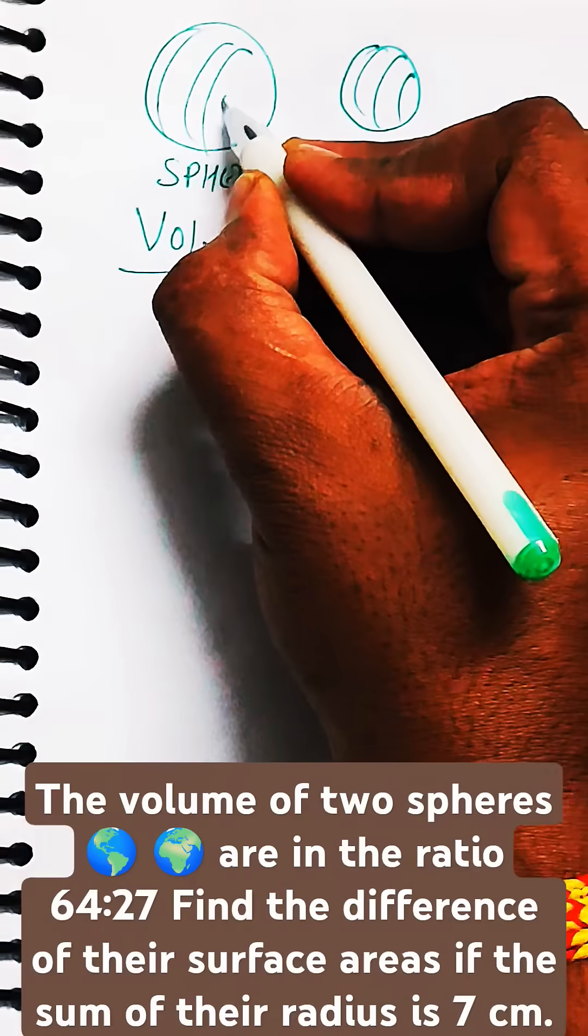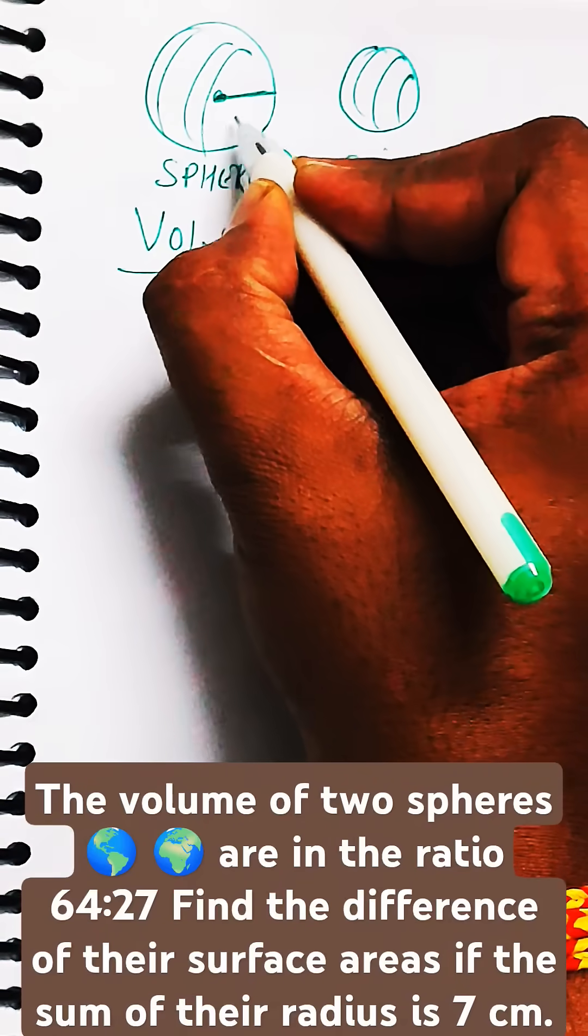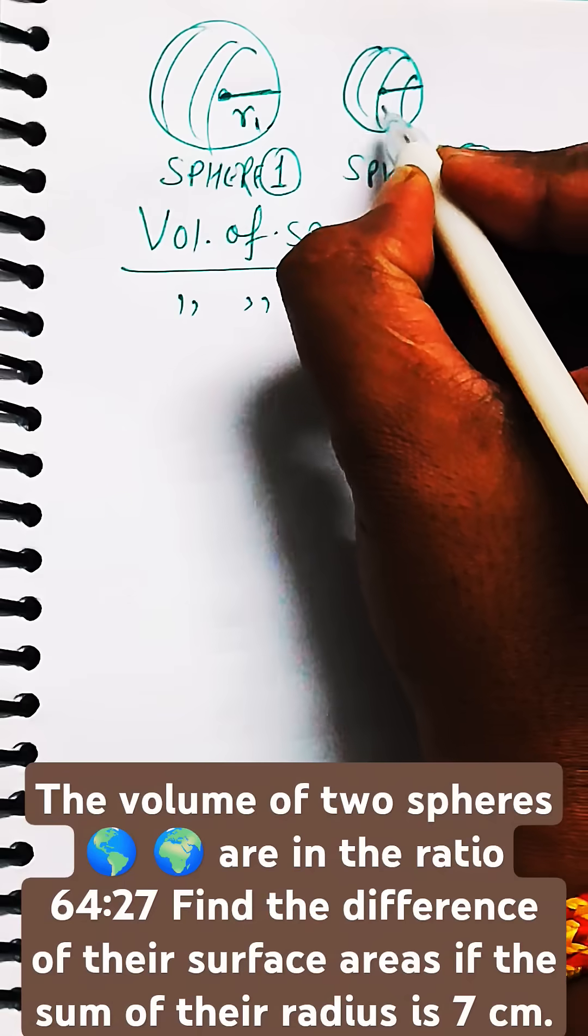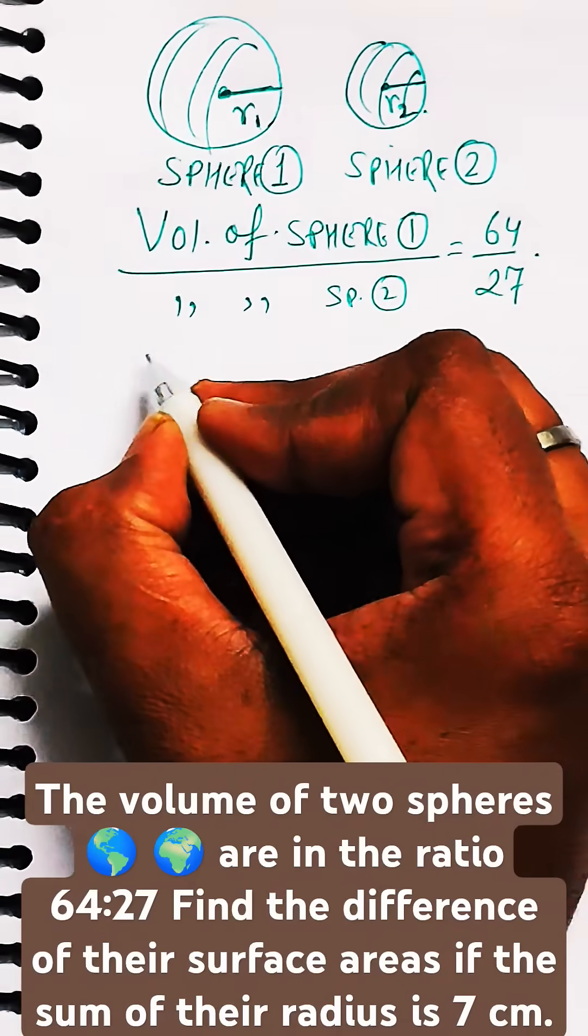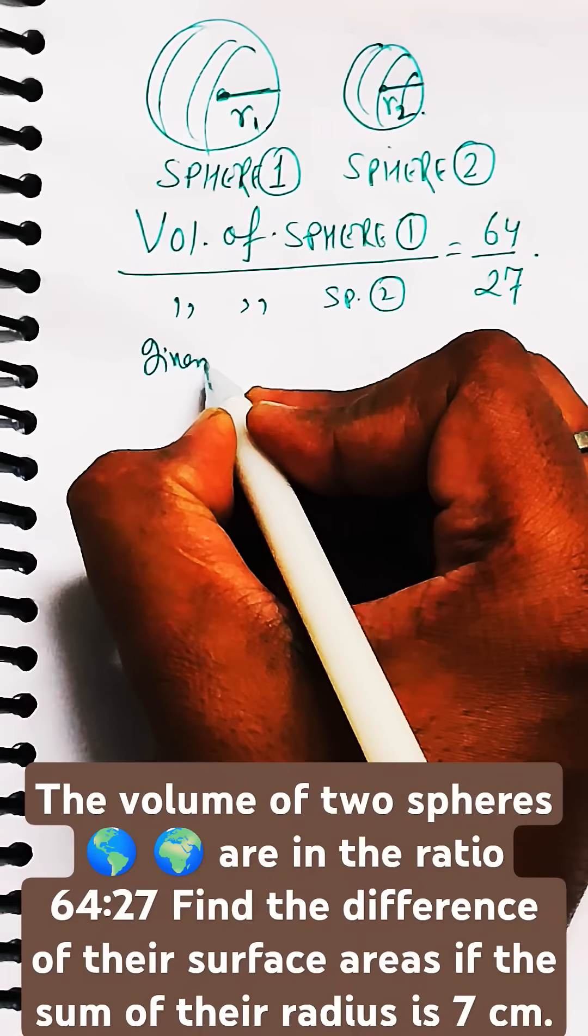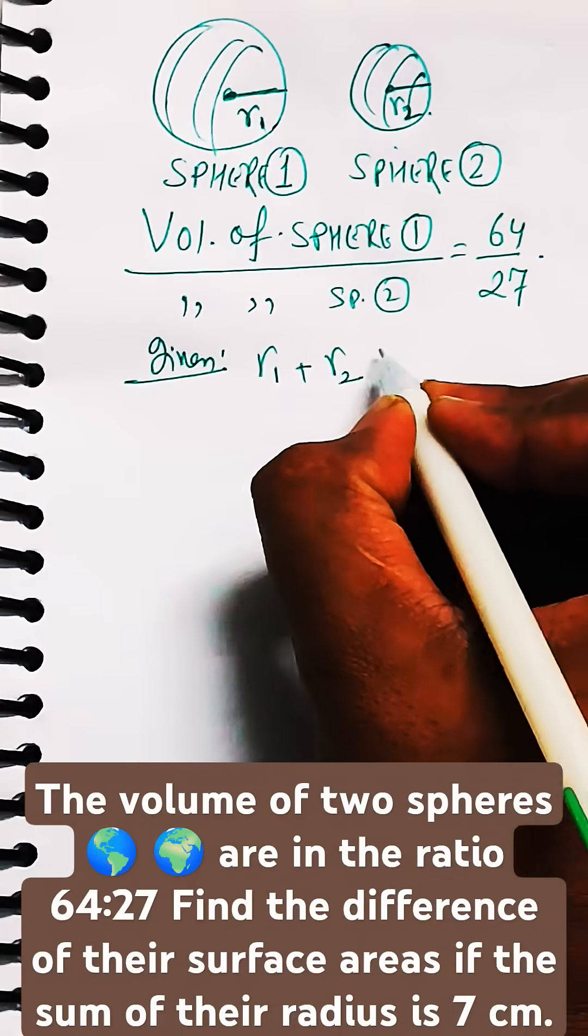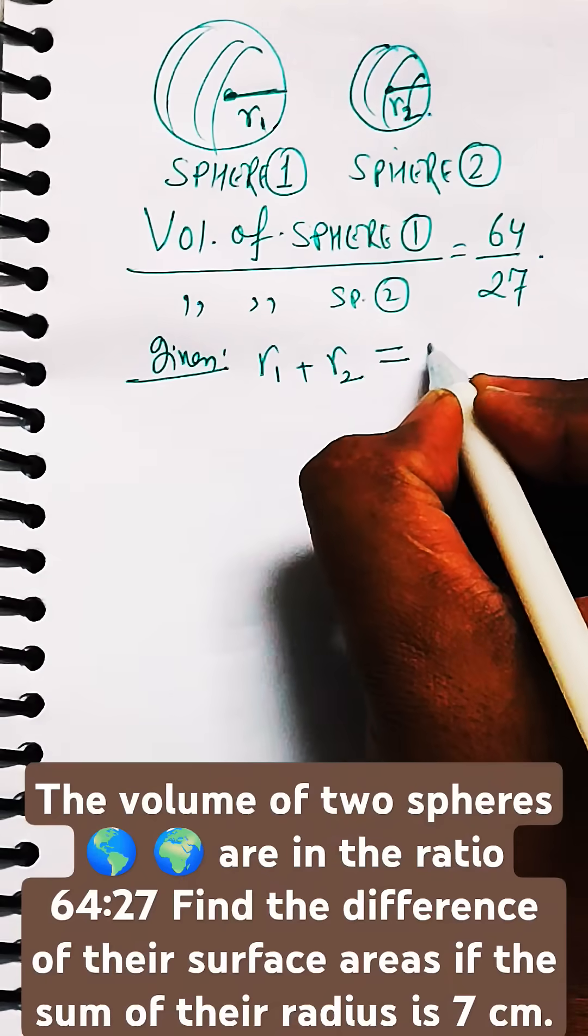It's also given that the sum of the radius of both the spheres is seven. So if the radius of both spheres are r1 and r2 respectively, then r1 plus r2, the sum of both the radii, is seven centimeters.